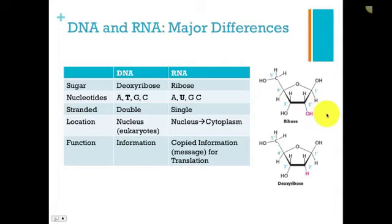The other difference is with the nucleotides. DNA uses A, T, G, and C, whereas RNA uses A, U, G, and C. This is one way we can tell these two biomolecules apart.